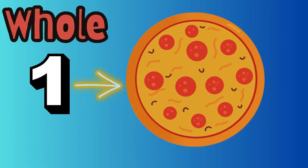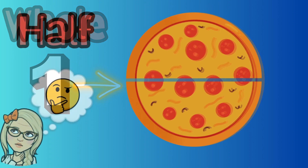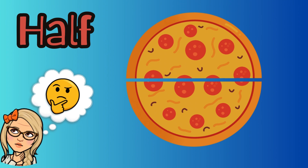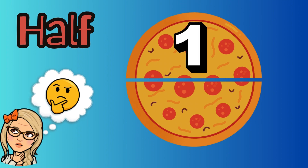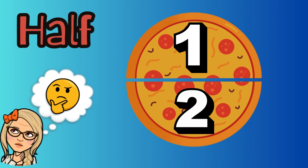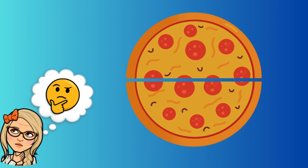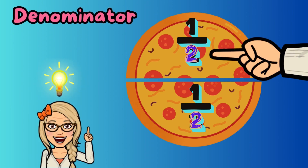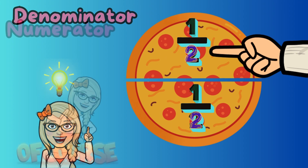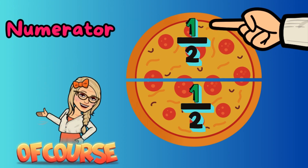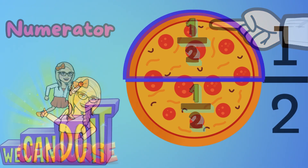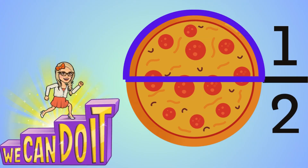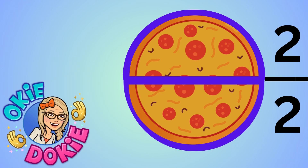Here we have one whole pizza, which I am going to cut up into smaller pieces. Now if I cut the pizza right down the middle, I get two equal side pieces. Each piece is one whole pizza divided in two, or one half of the whole. We can write that as a fraction. This number, the denominator, tells us how many pieces make up the whole. The numerator tells us how many pieces we are talking about. So this is one half of the pizza. And these are two halves. Two halves make one whole.